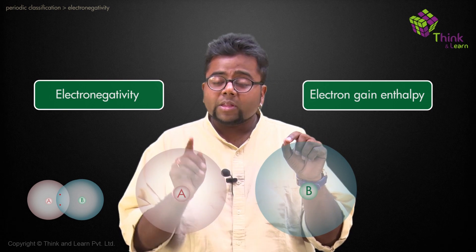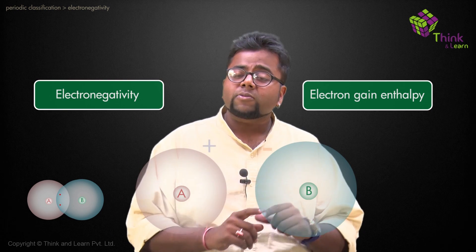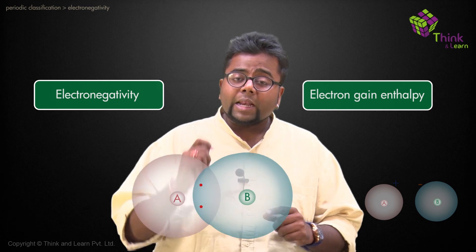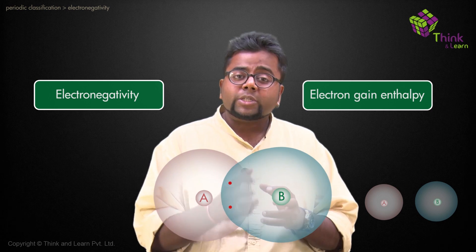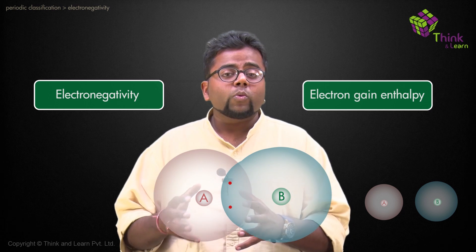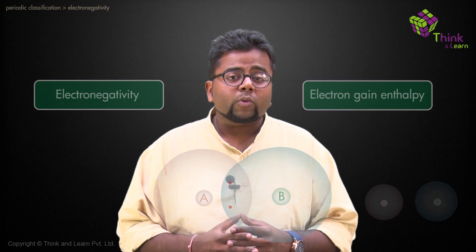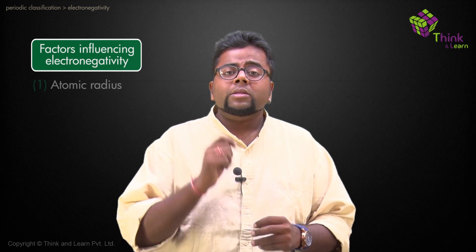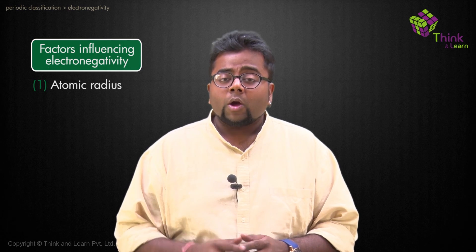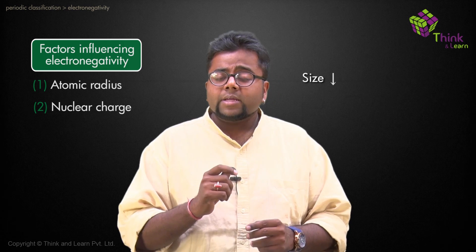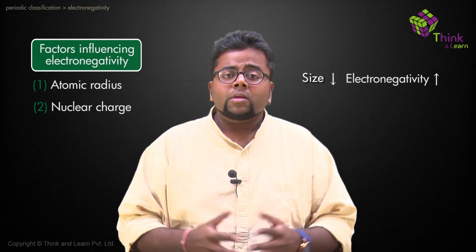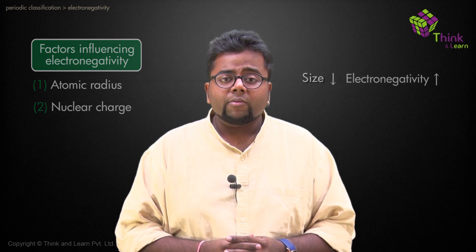In electron gain enthalpy, there was a complete transfer of electrons taking place, but in electronegativity, it is just the shifting of the shared pair of electrons towards itself. Electronegativity depends on size and nuclear charge — smaller the size, higher would be the electronegativity.